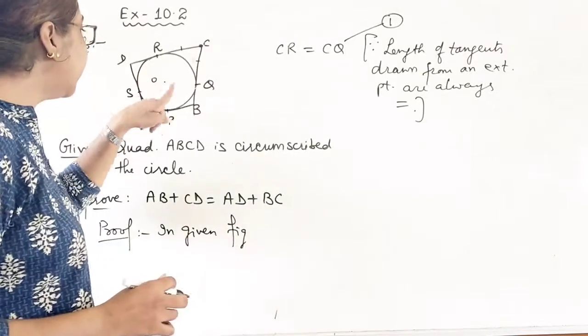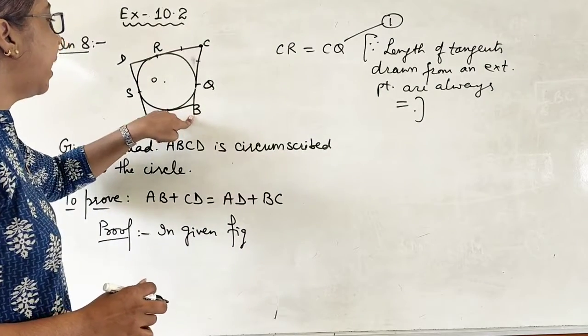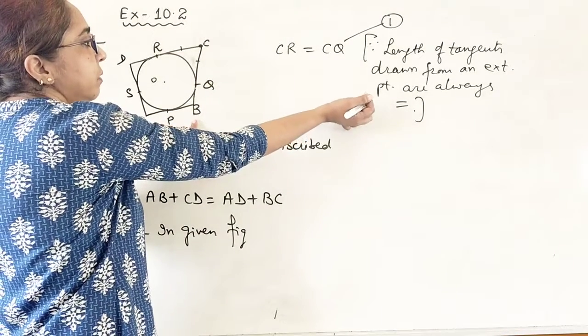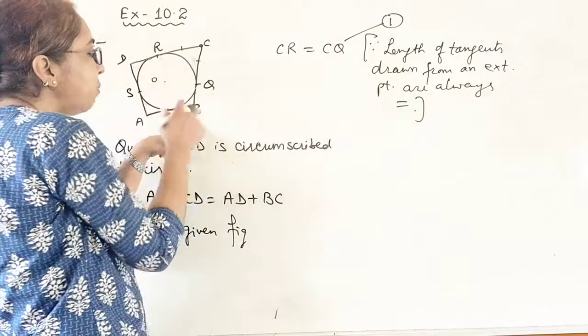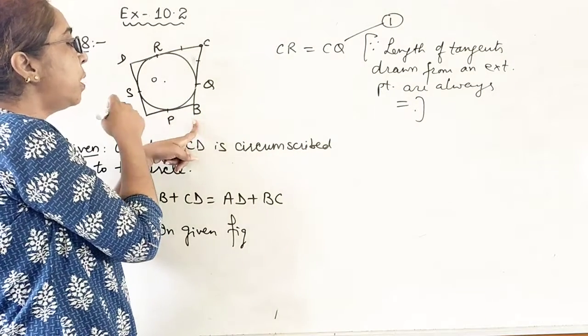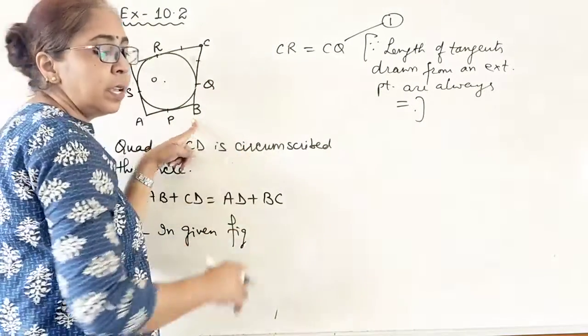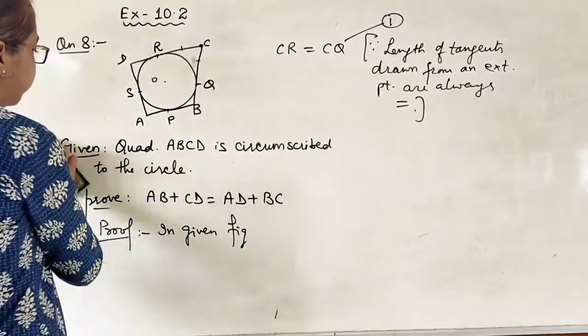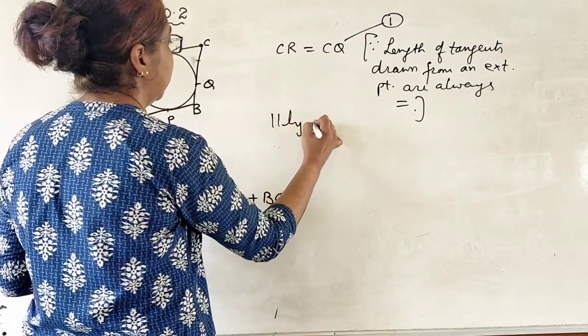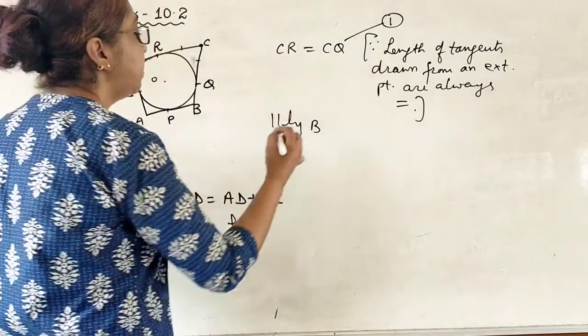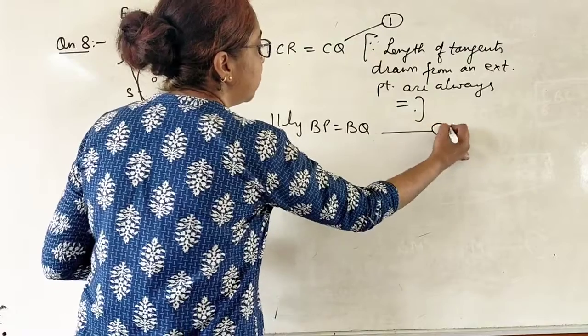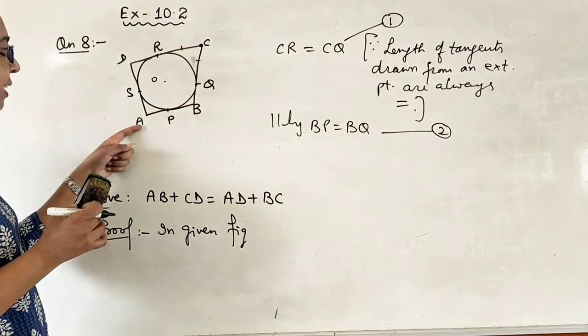Now just see this B point. And again, we have just done this one. In the same way, if B is an external point, then BQ is equal to BP with the same reason. So I can write it here like, similarly, BP is equal to BQ number 2.